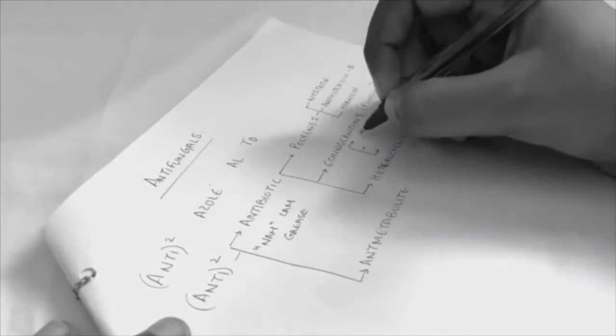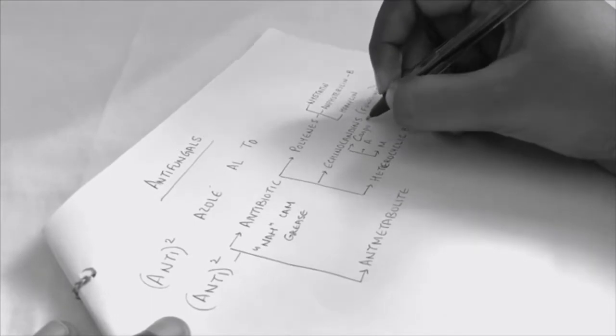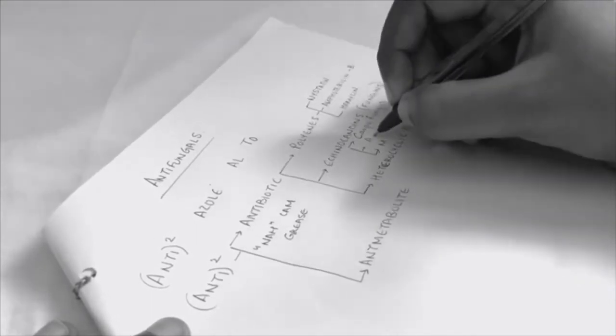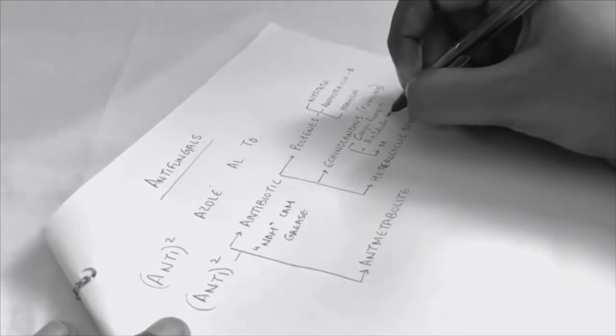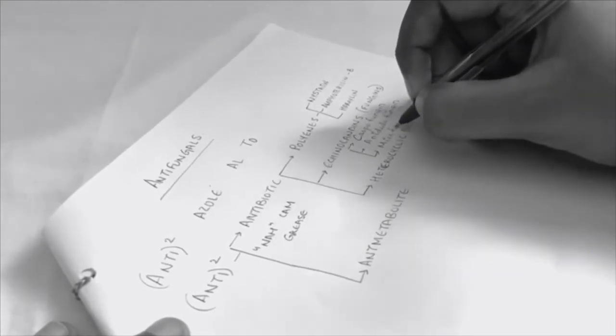Echinocandins are all fungíns—they have the suffix fungin. These are C-A-M: caspofungin, anidulafungin, and micafungin.